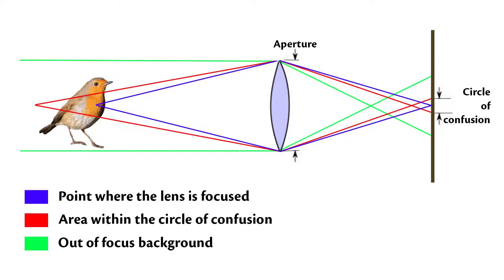First of all we're going to cover what the circle of confusion is. This might be a term that a few people have never even heard of. I'm going to put an image on the screen now that should help explain it. You can see in this image that we've got a picture of a robin and a lens, and the flat line is where the sensor would be — that's where the image is focused to. Precise focus is only possible at an exact distance from the lens. At that distance a point object will produce a point image. Otherwise, a point object will produce a blur spot shaped like the aperture, typically and approximately a circle.